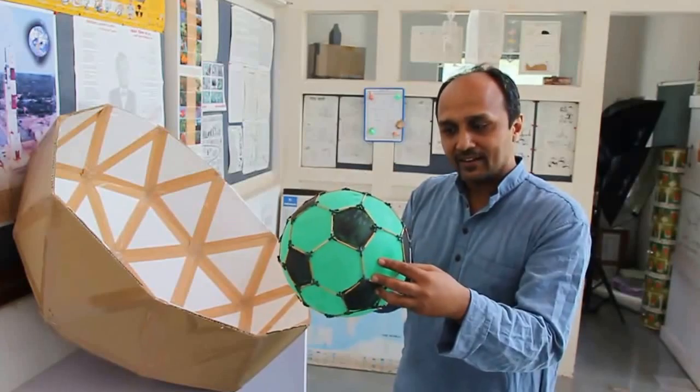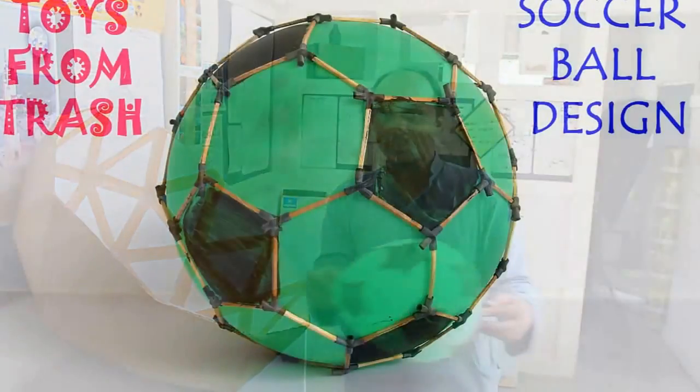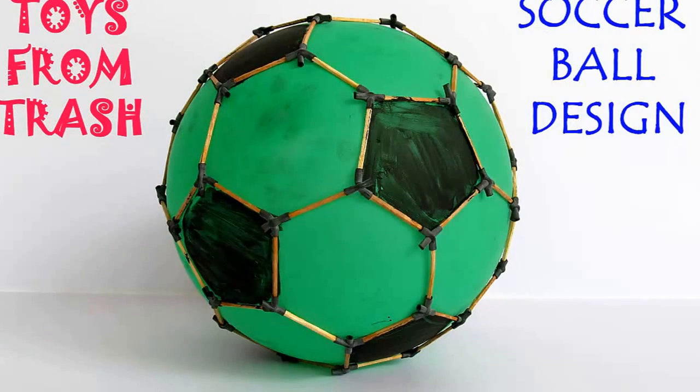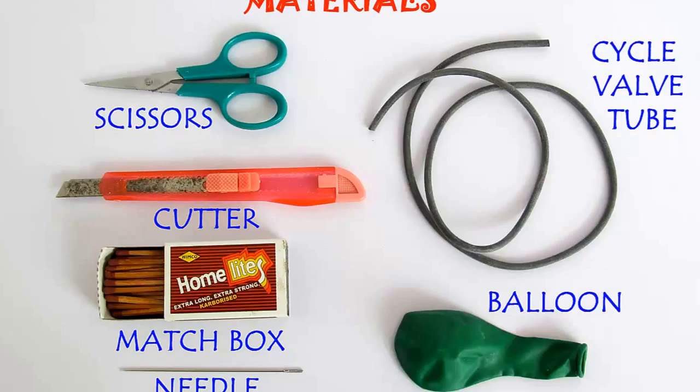Have you ever tried to make it? And if you look at it, we made this with just matchsticks and cycle ball tube. And so to make this the cheapest football on earth, you need matchsticks and cycle tube.